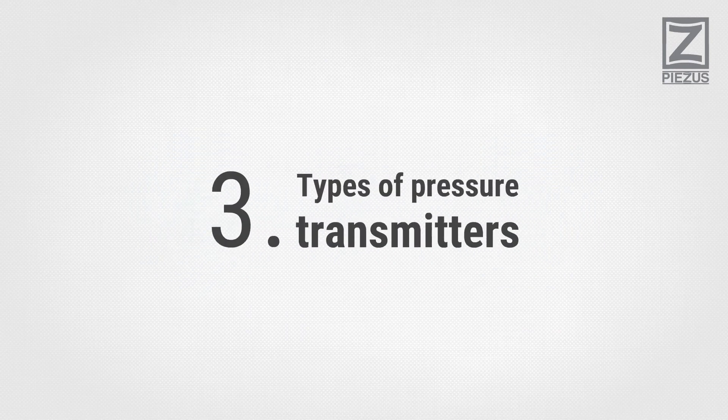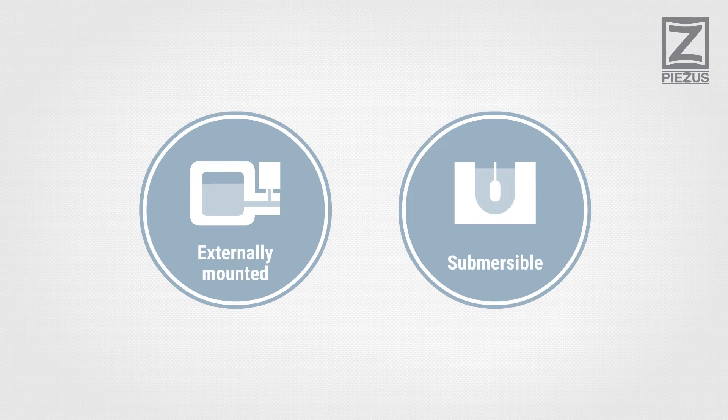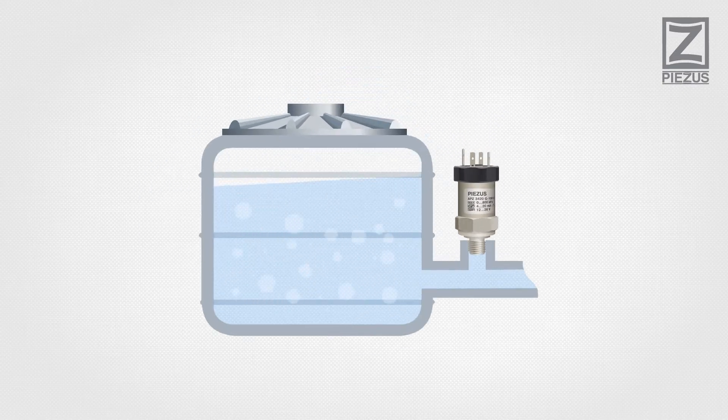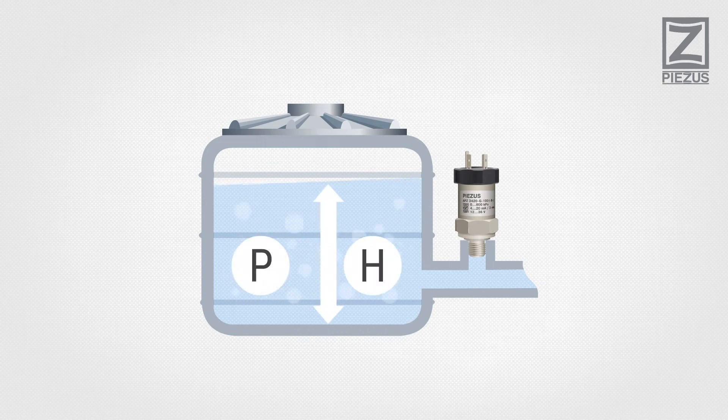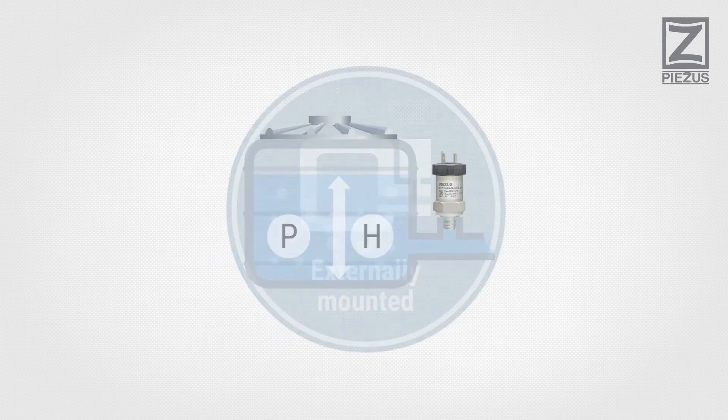Types of Pressure Transmitters: There are two most popular types of pressure transmitters, externally mounted and submersible. Externally mounted pressure transmitters are used for measuring pressure and level of liquids and gases and usually have a thread or a flange mount.